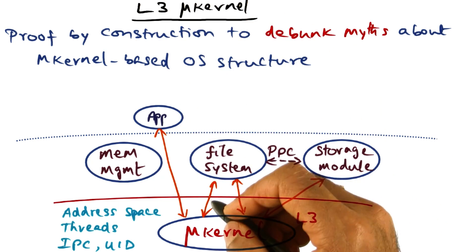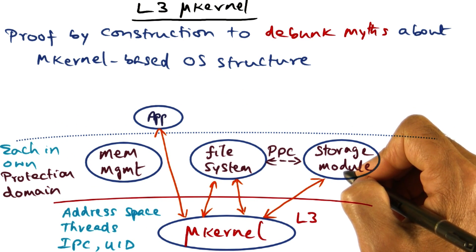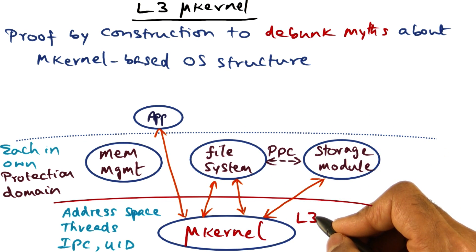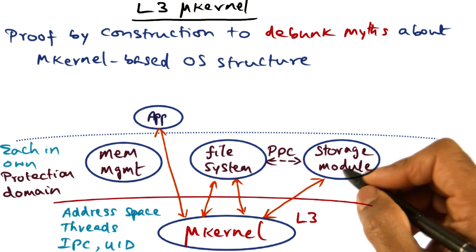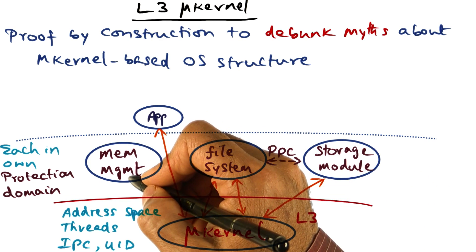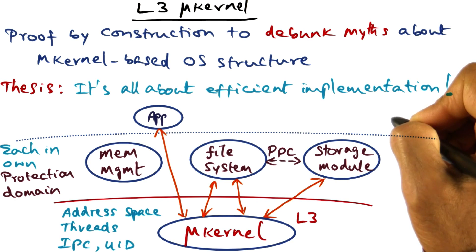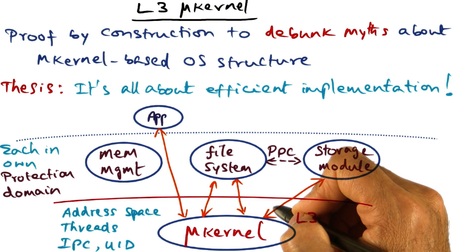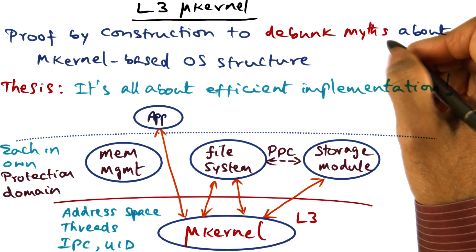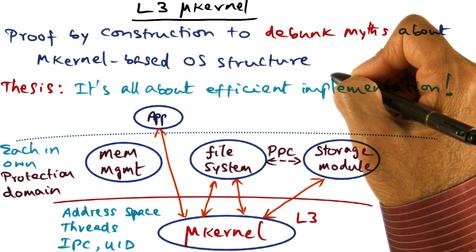So what is different about L3 microkernel? The key distinction is that each of these services of the operating system has to be in its own protection domain, not necessarily distinct hardware address spaces. The point L3 establishes by proof of construction is that there are ways to construct a microkernel-based operating system providing these services efficiently, knowing the features of the hardware platform. L3's argument is it's all about efficient implementation of the microkernel, and not the principle of a microkernel-based operating system structure. To fully understand how L3 microkernel goes about systematically debunking the myths, we have to understand the strikes against the microkernel.